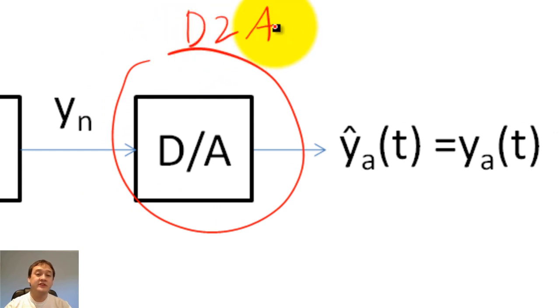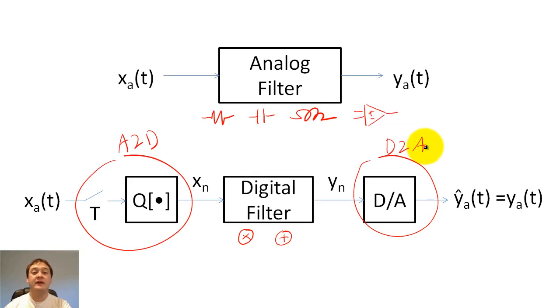We will discuss digital filtering operations by using the low-pass filter example that we used last lecture.